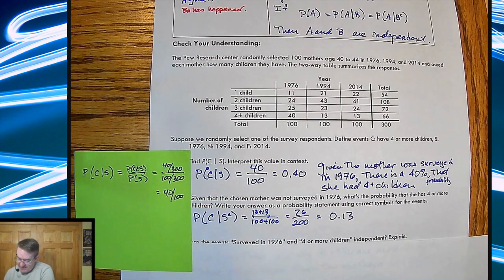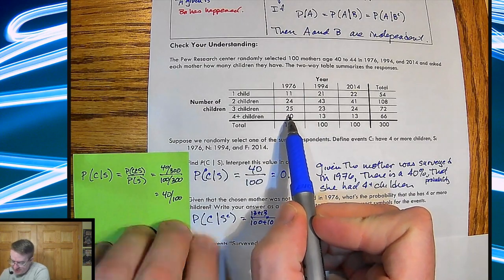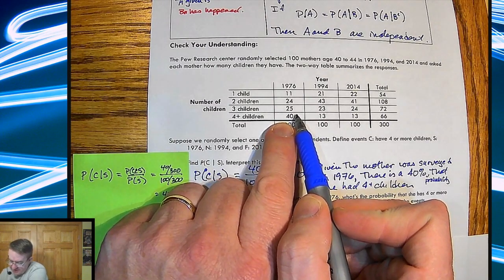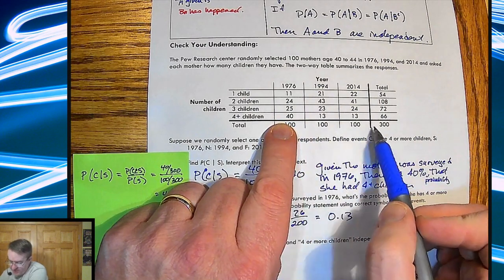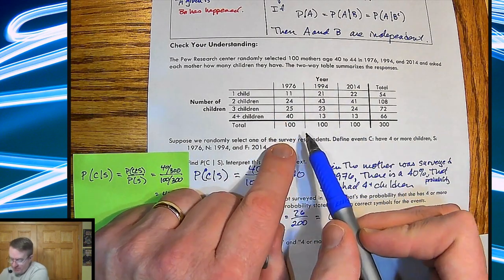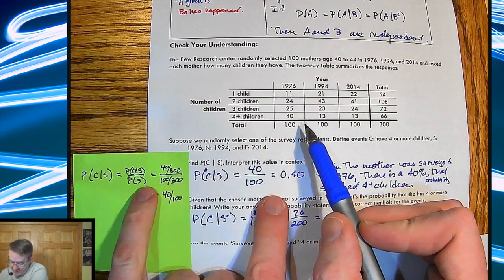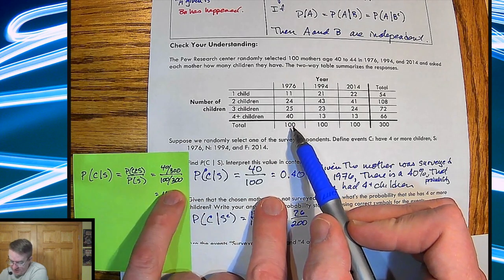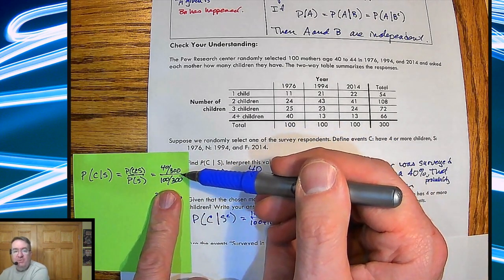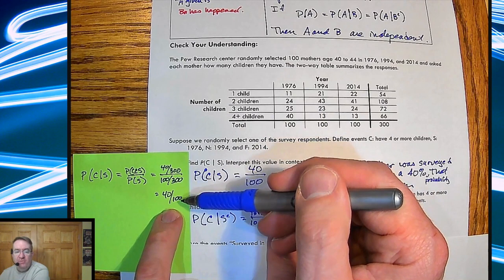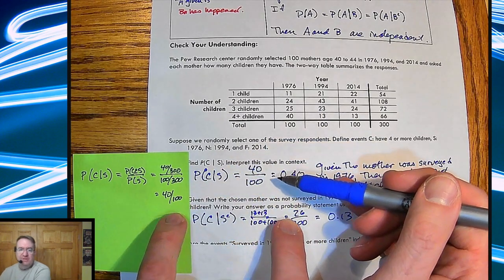So remember, what's the probability of C and S? The probability of C and S, what's the probability of having four children and being surveyed in 1976? So if we're talking the entire thing, that's 40 out of 300. What's the probability of being surveyed in the year 1976? 100 out of 300. Denominators are the same. Those are going to drop. And so that's how we end up getting 40 out of 100, which is the same thing over here.